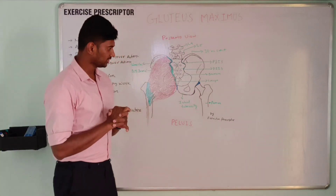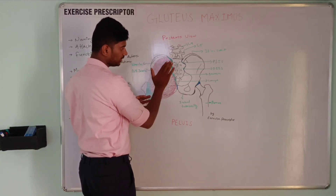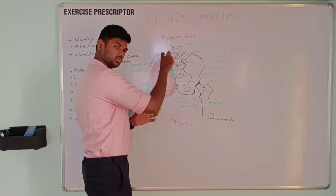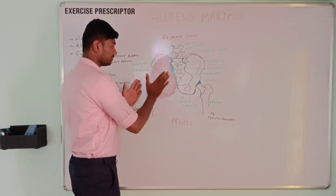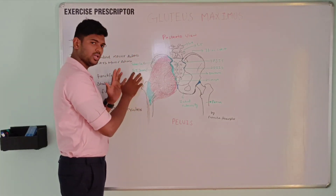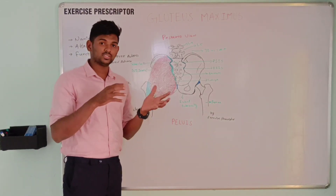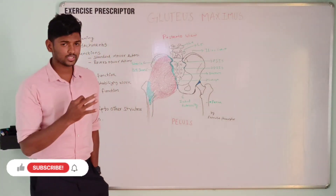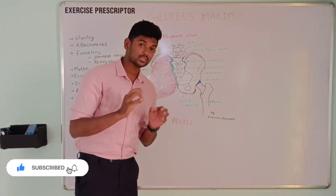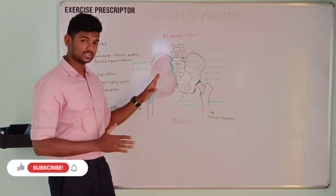Now, key points. First: the proximal superior muscle fibers of gluteus maximus also cross the ilium and sacrum, so it crosses the sacroiliac joint and helps to stabilize the sacroiliac joint. Second: gluteus maximus action is lateral rotation of the hip, while tensor fasciae latae action is medial rotation of the hip — both muscles attach over the iliotibial band, so we can consider they have opposite rotational actions. Third: gluteus maximus is the largest muscle in the human body. Fourth: it can also extend the knee. Fifth: it can stabilize the arch of the foot.